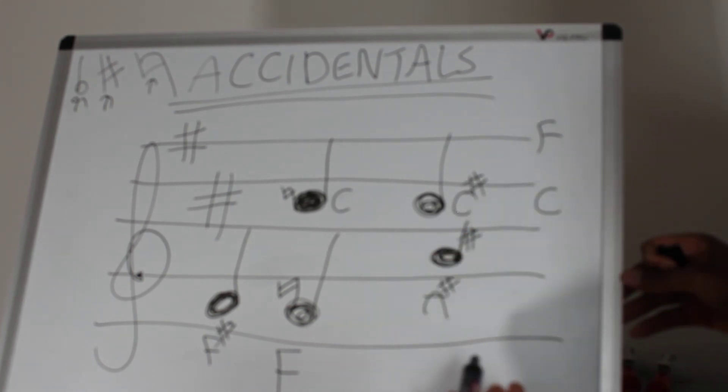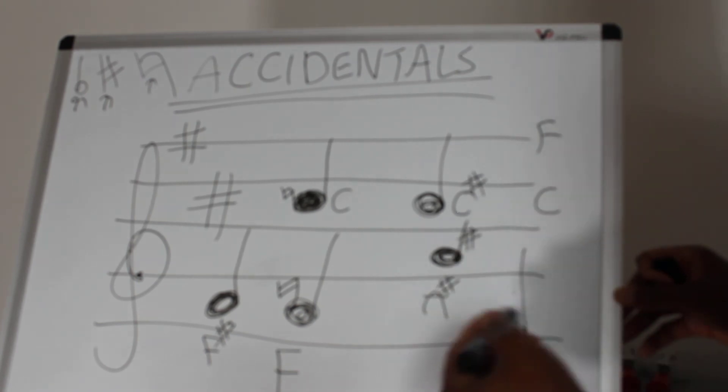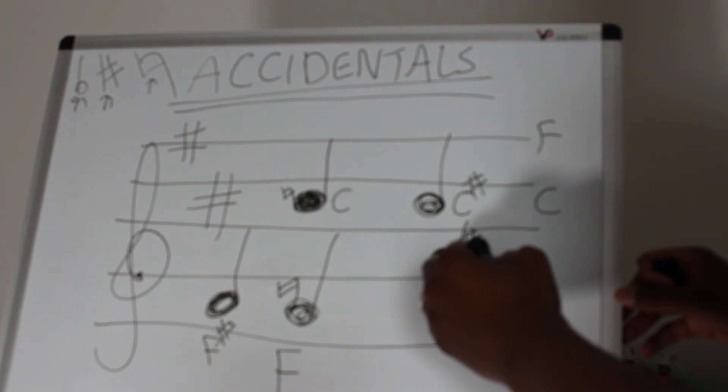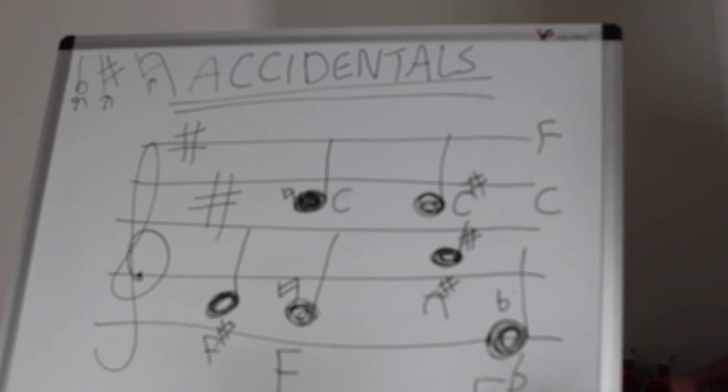If I wanted to play an E flat, here's an E. To make that E flat, I add a flat sign to that note, and that becomes E flat.